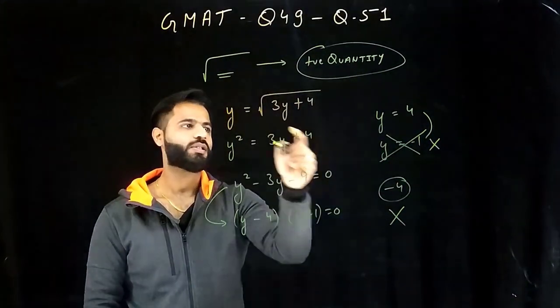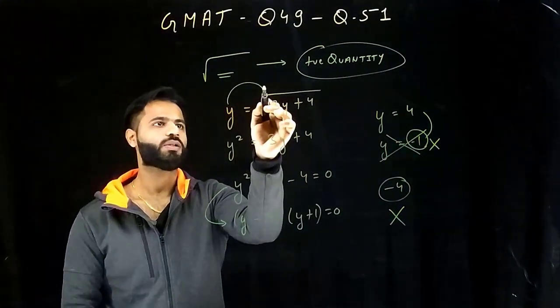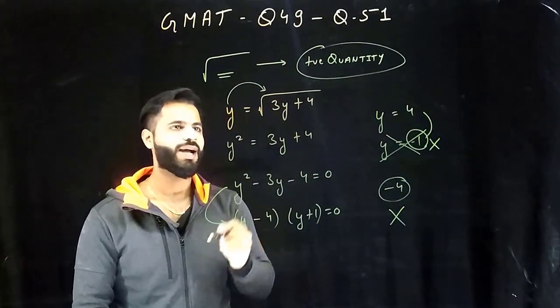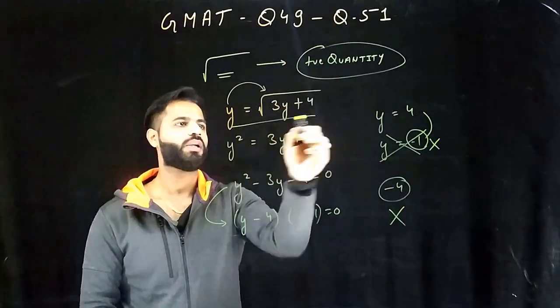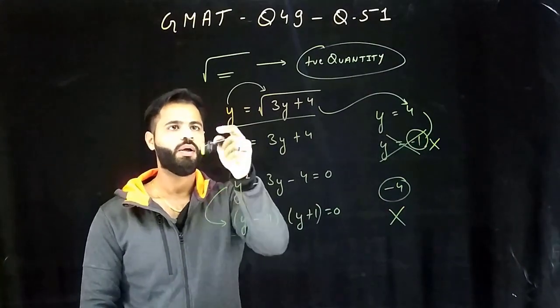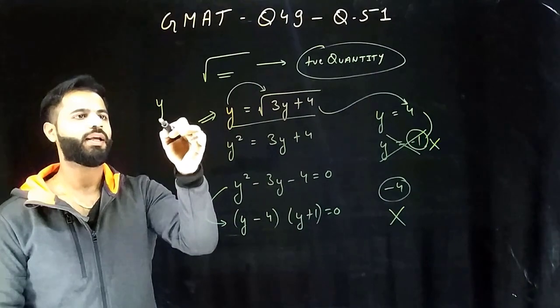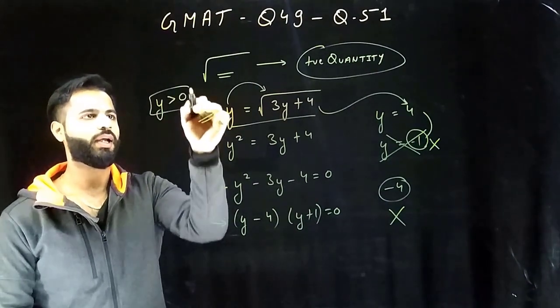You cannot say y is a negative quantity because y is a square root of a quantity. So that means this particular equation has only one solution: y equals to 4. Minus 1 is not going to work. Once you see this kind of statement, always write y is greater than zero before moving ahead because it's a positive quantity.